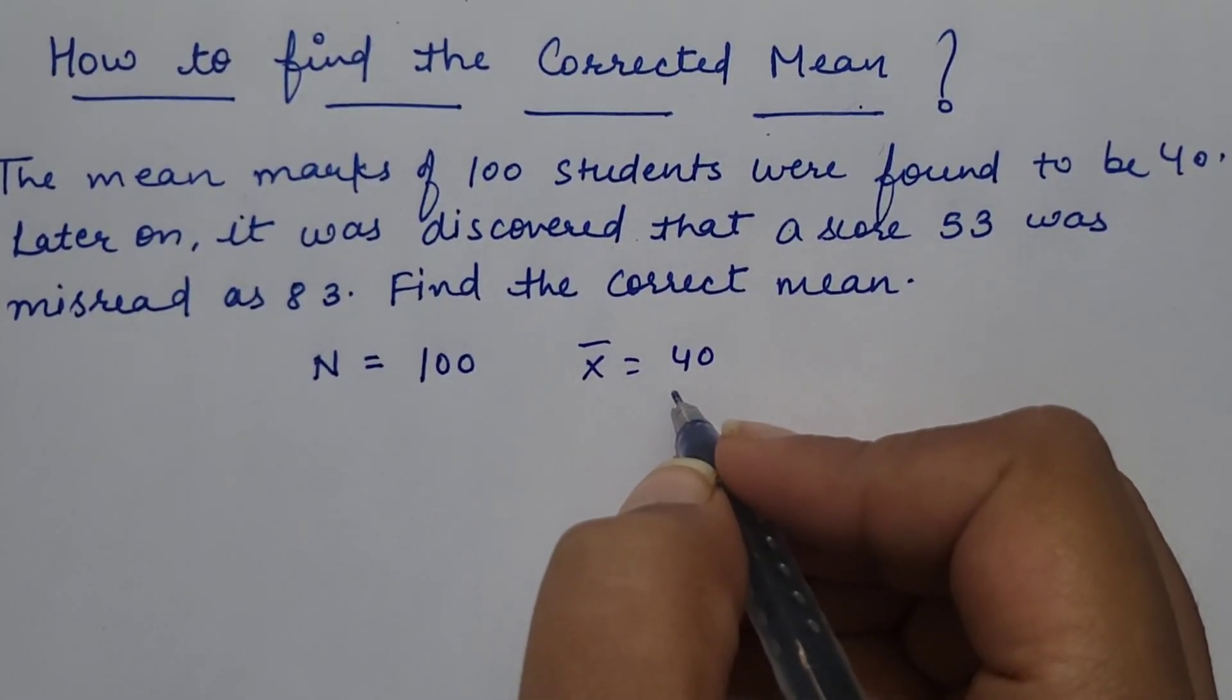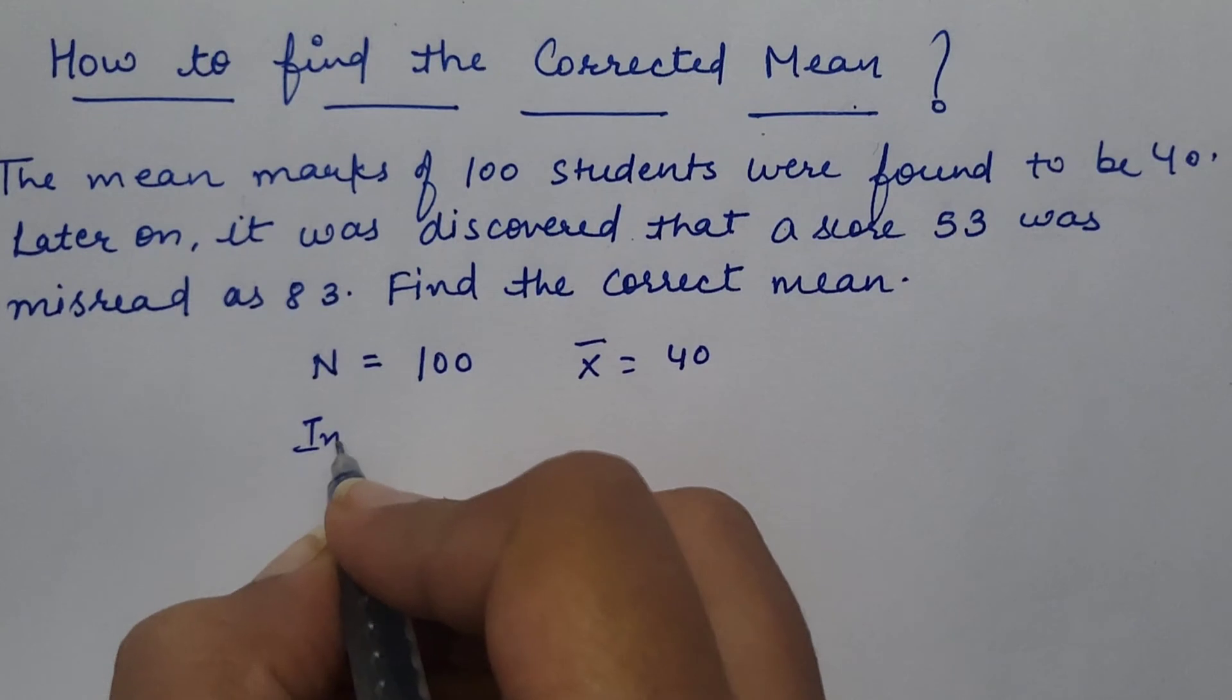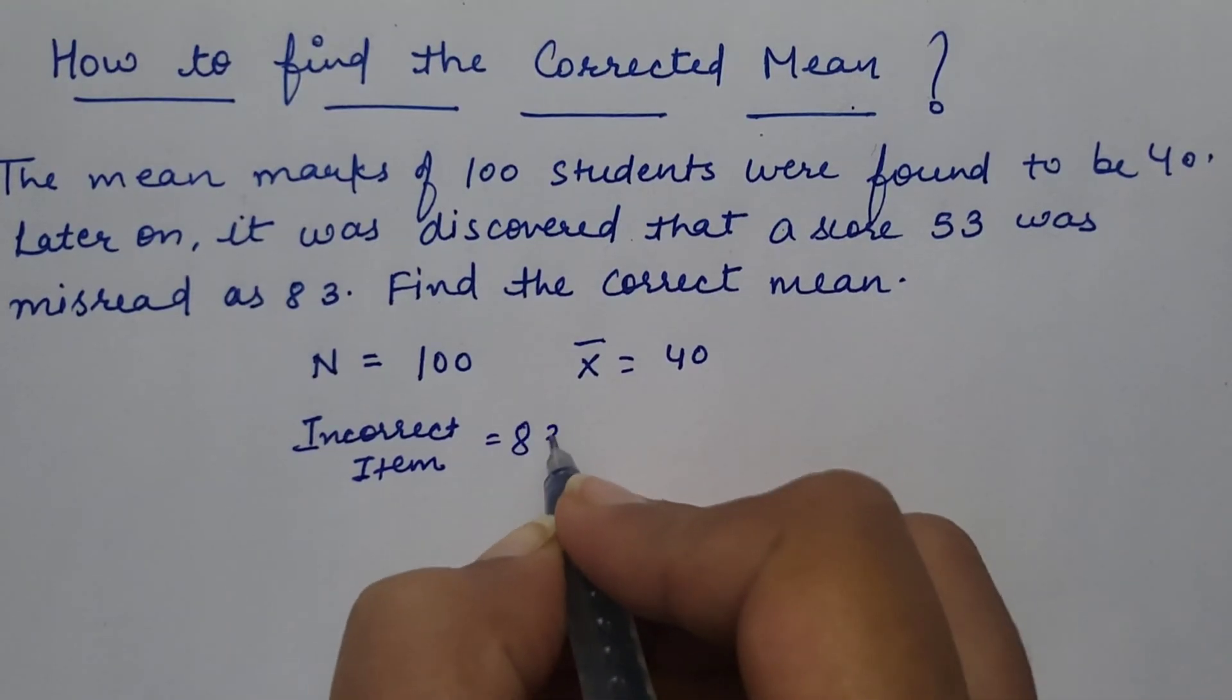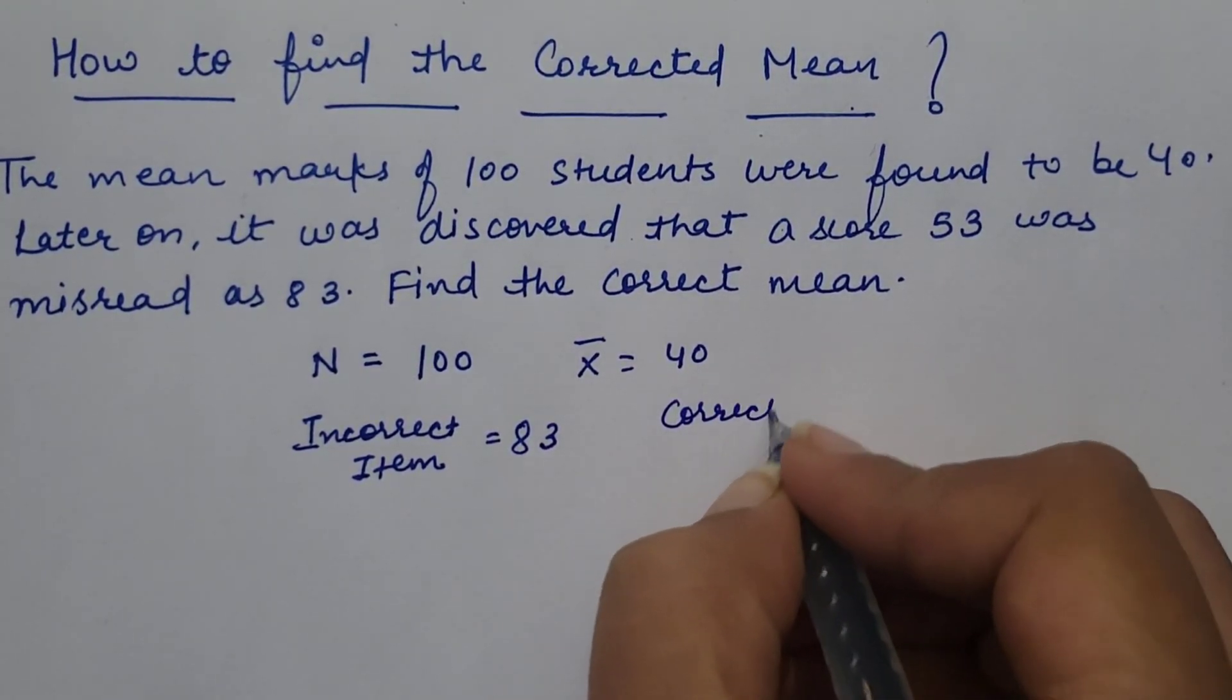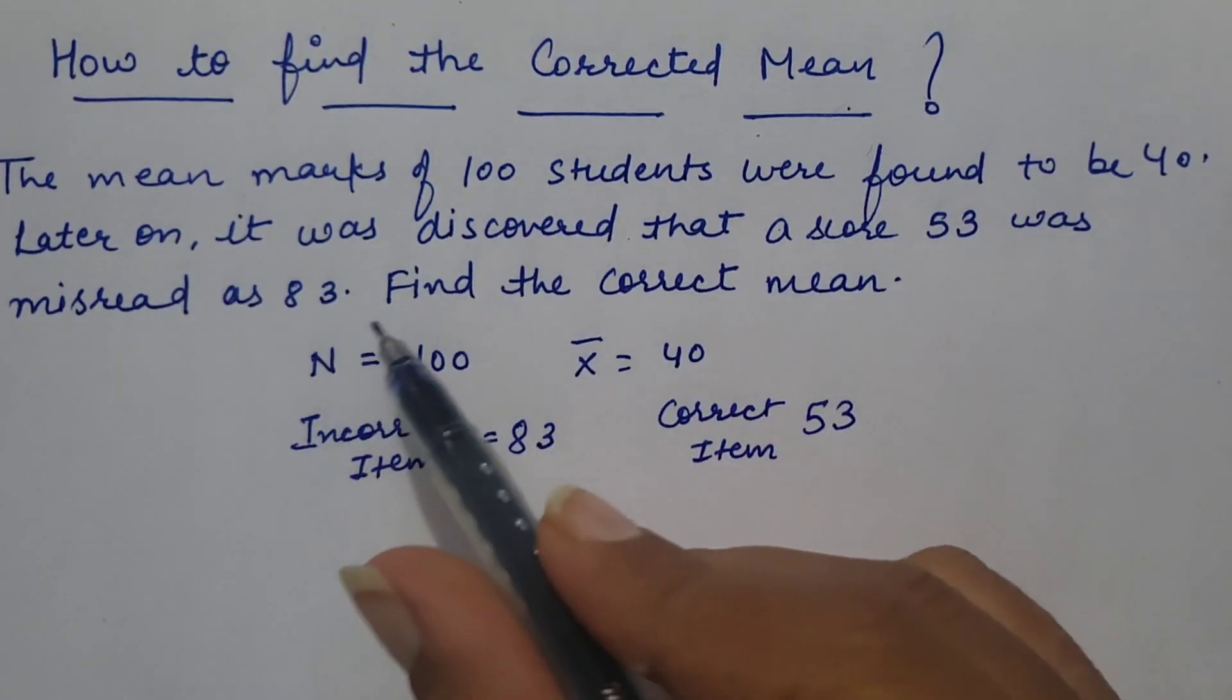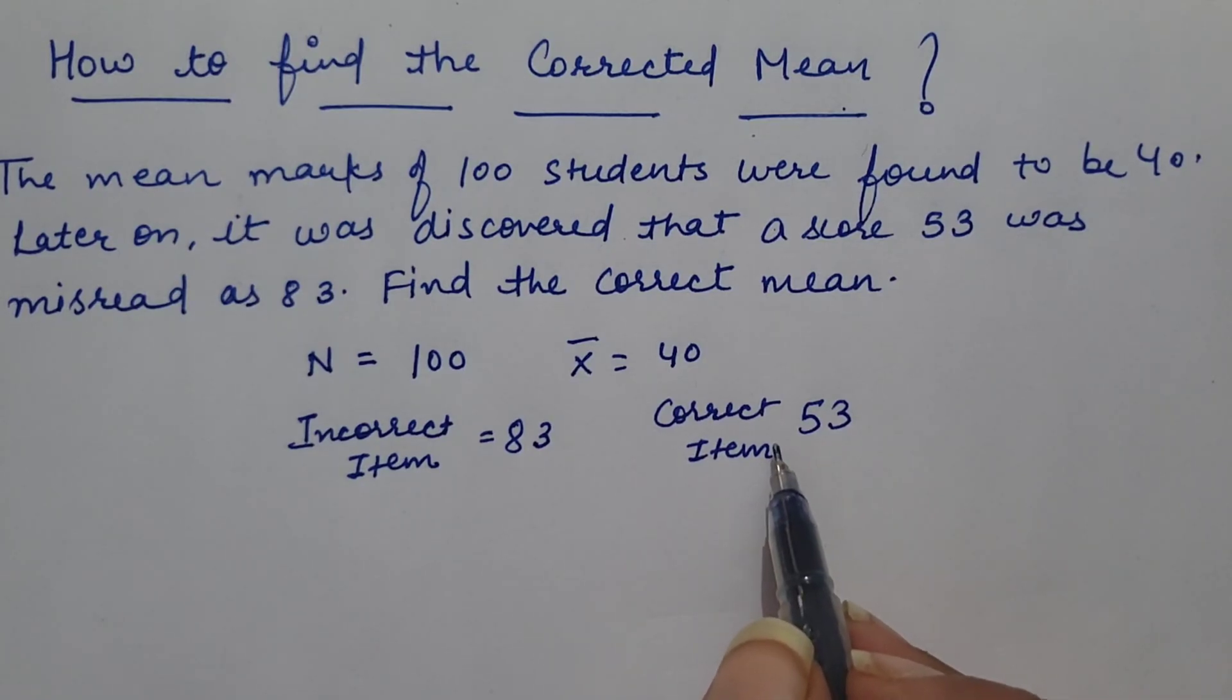Later on, it was discovered that a score 53 was misread as 83, which means 83 is the incorrect item and 53 is the correct item.